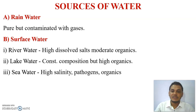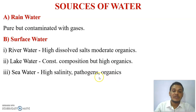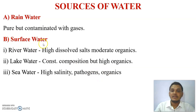Sea water also contains biological impurities such as pathogens, organic compounds, algae, fungi, and bacteria. These types of impurities are also present. That's why surface water is also one of the impure forms of water.